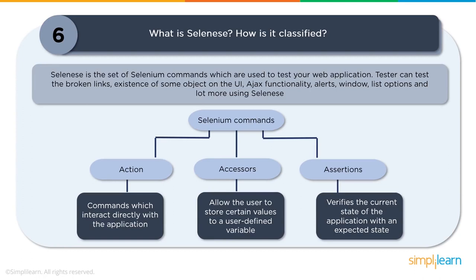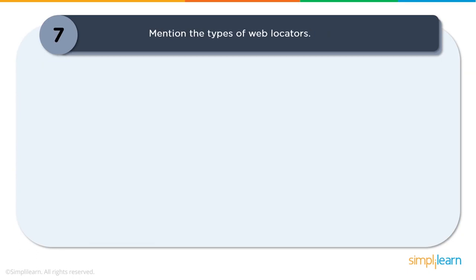The third category is assertions. Assertions are like accessors but they verify the state of the application against what is expected — a comparison of actual versus expected results. There are two types: soft assertions (e.g., verifyTitle) which verify the title and continue the test case even on failure, and hard assertions (e.g., assertTitle) which stop the test case from executing if the assertion fails.